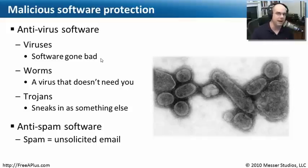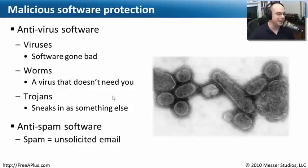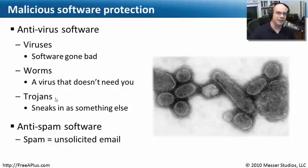Another type is called a worm. Unlike a virus, a worm doesn't need you to click a link or plug in a USB key. It's designed to take advantage of vulnerabilities in the operating system so it can move from machine to machine without human interaction. Now that we're all connected over networks, worms use these network connections to propagate automatically.